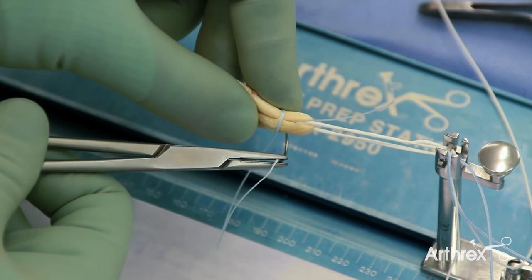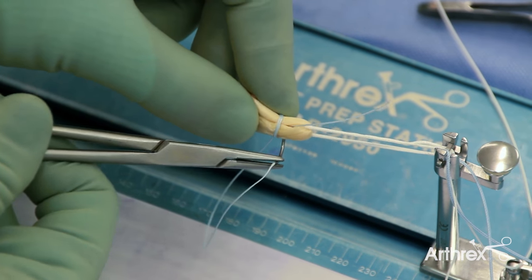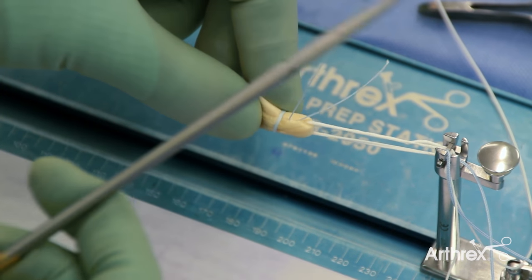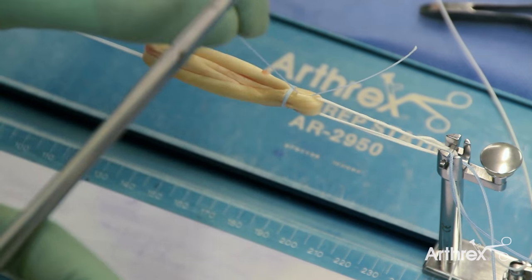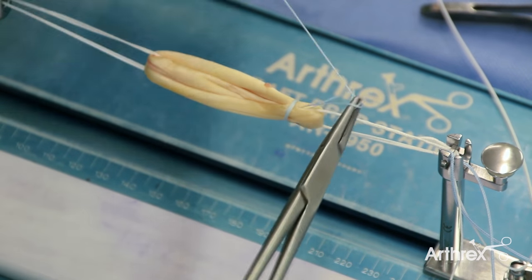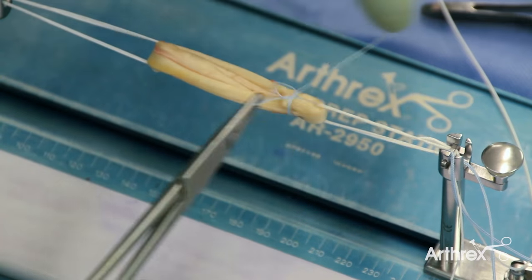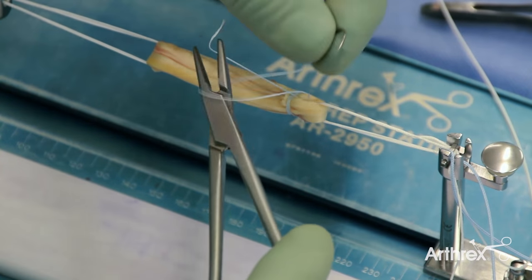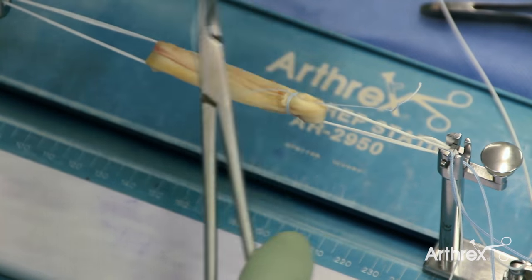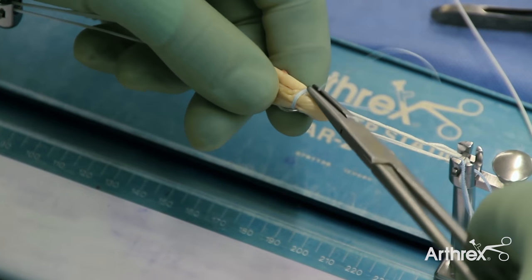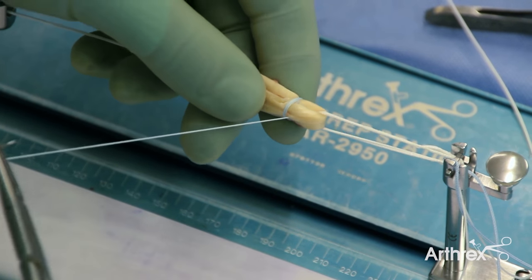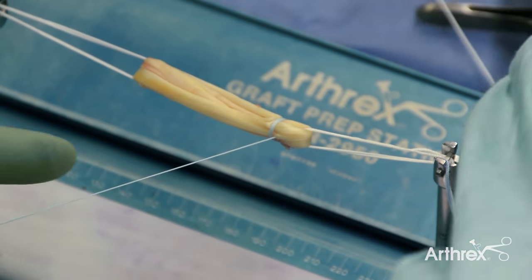The needle is then brought back through the center of the graft and is tied in the standard way. To bury the knot, we then cut the short end and take the needle out through the graft link to bury the knot.